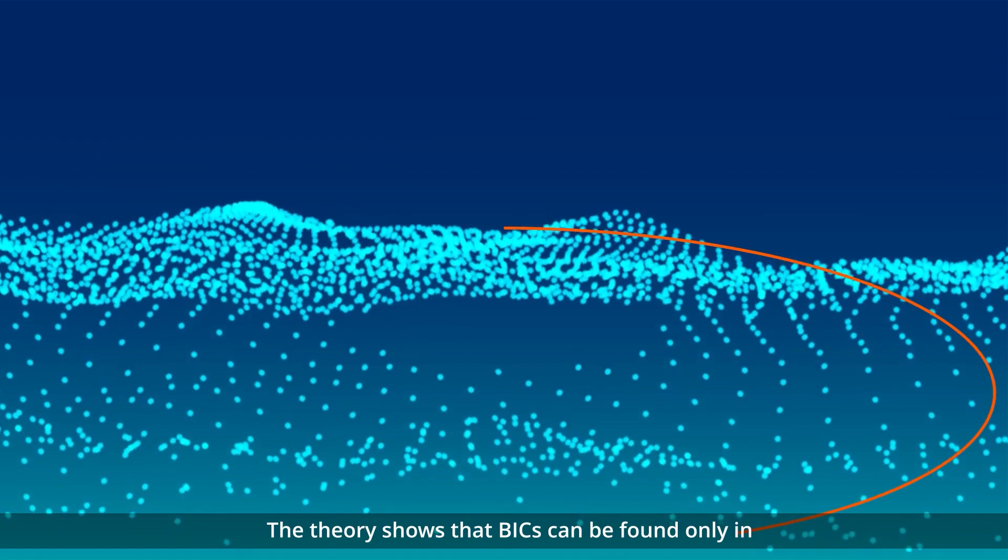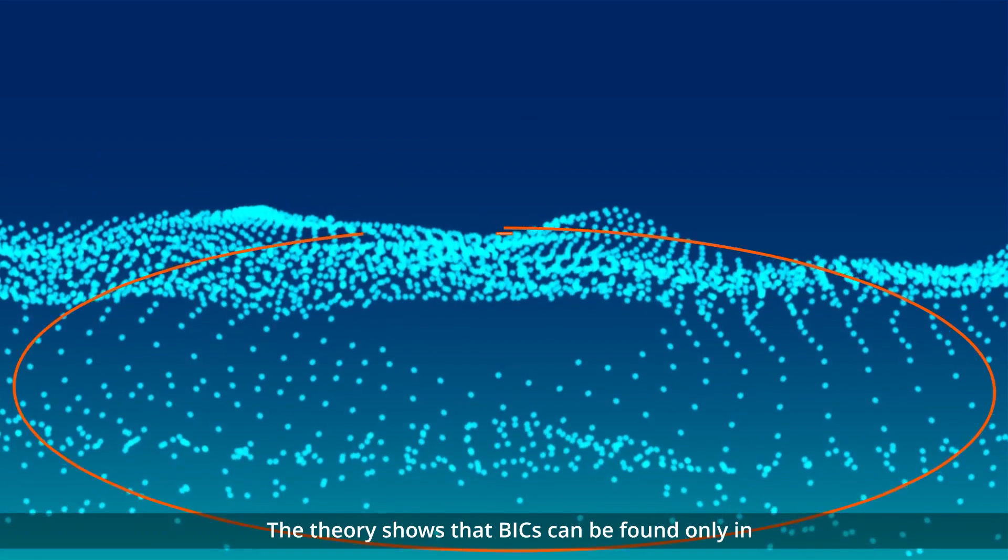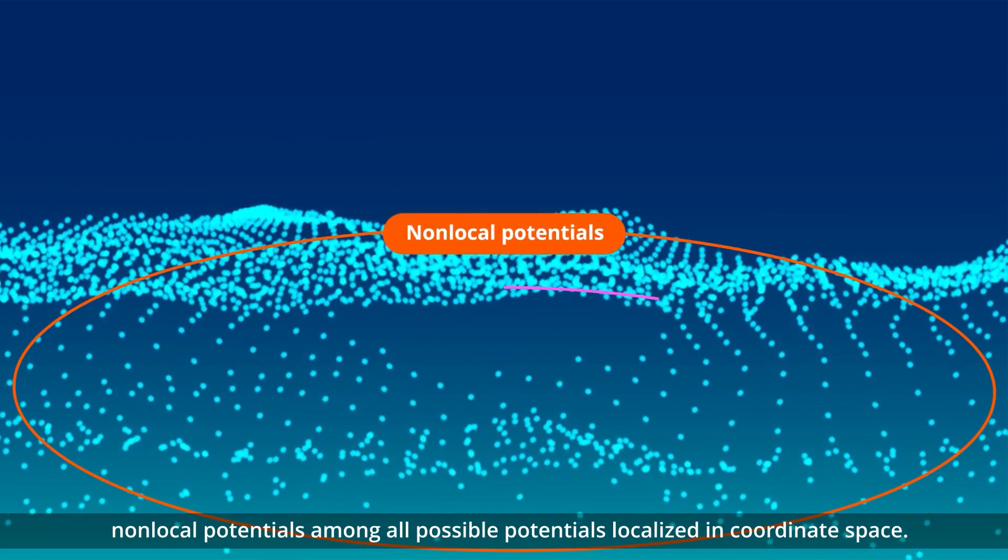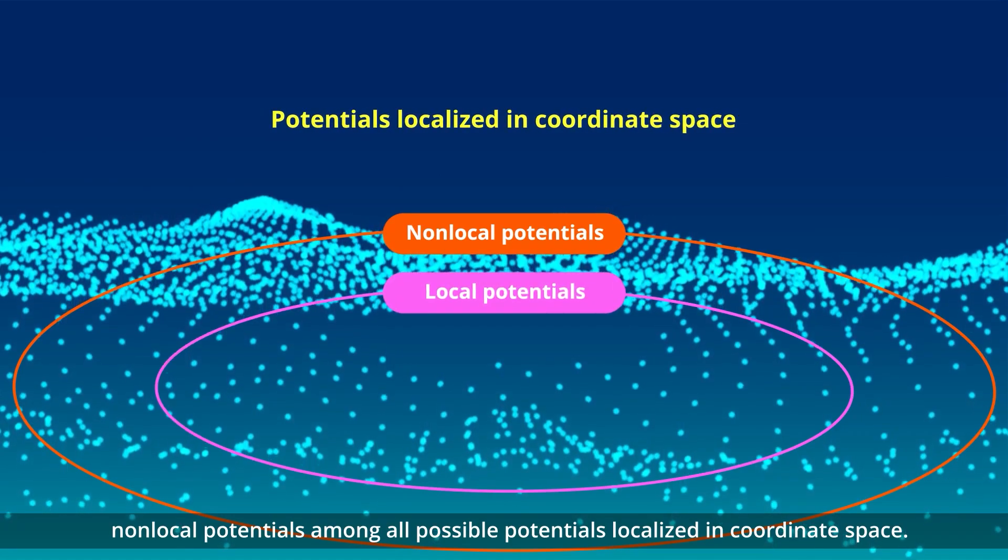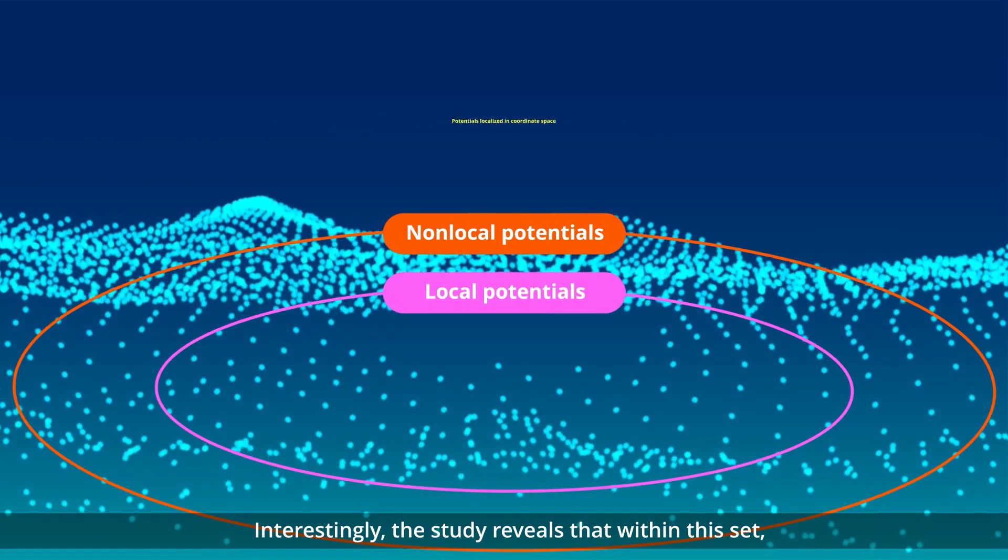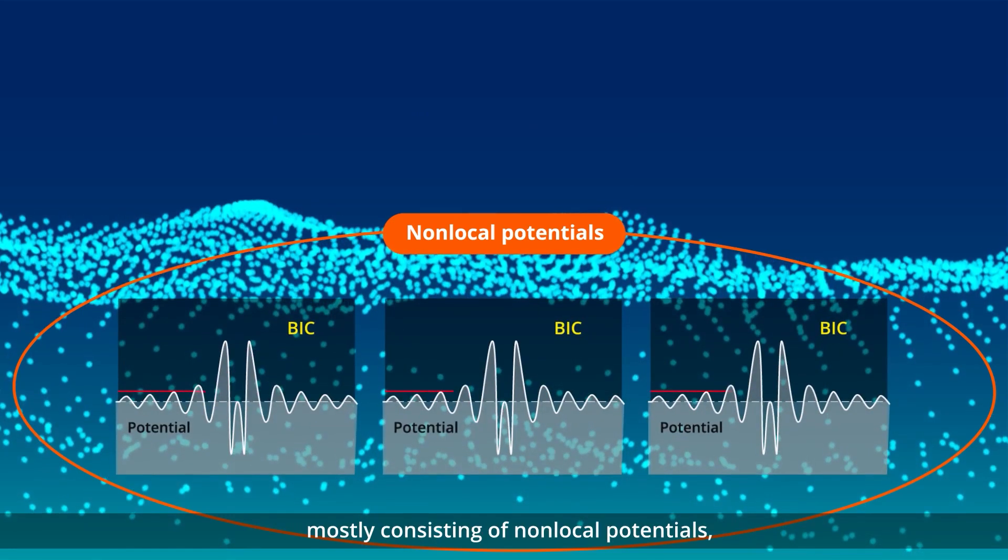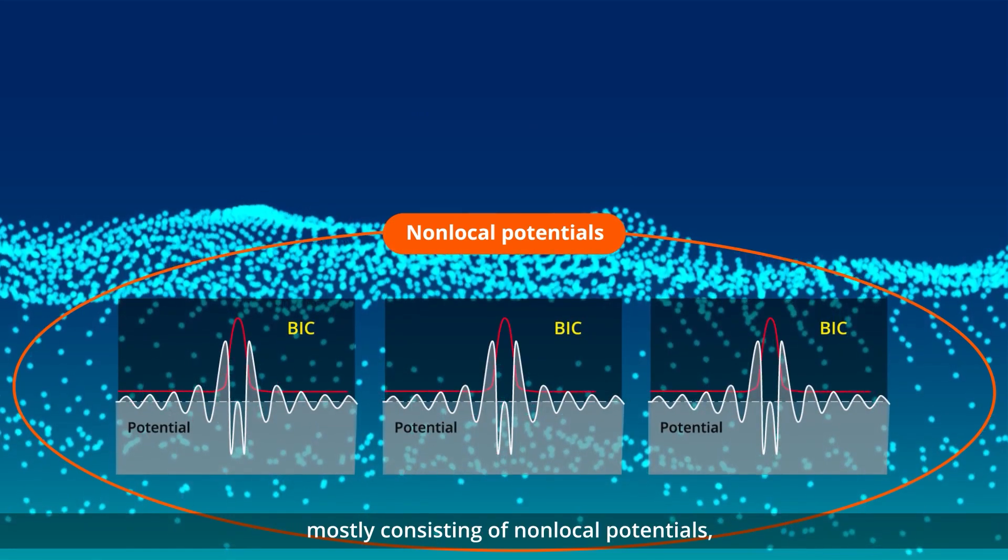The theory shows that BICs can be found only in non-local potentials among all possible potentials localized in coordinate space. Interestingly, the study reveals that within this set, mostly consisting of non-local potentials, BICs are as common as negative energy bound states.